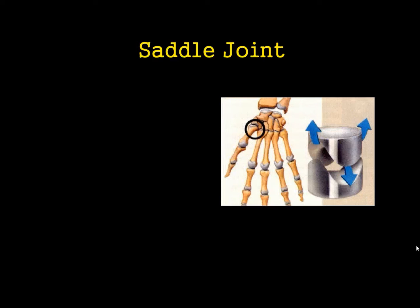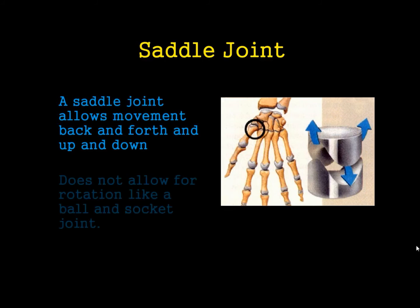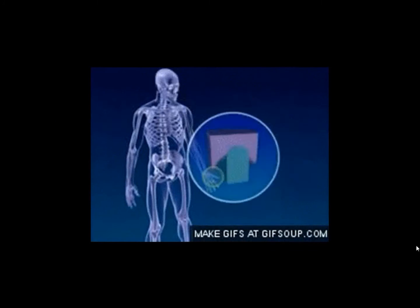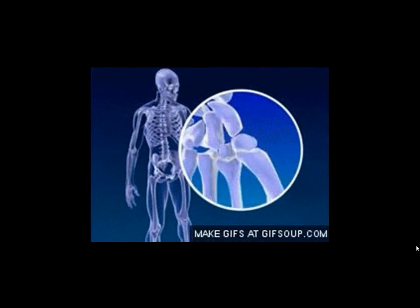We also have the saddle joint, which allows two different planes of movement — back and forth and up and down. Again, it doesn't allow rotation because it doesn't have that full 360 degrees; it has a particular shape that prevents that. A great example of this is the thumb joint. You can see it allows this sort of rocking movement side to side, but again doesn't allow full rotation like a ball and socket joint.